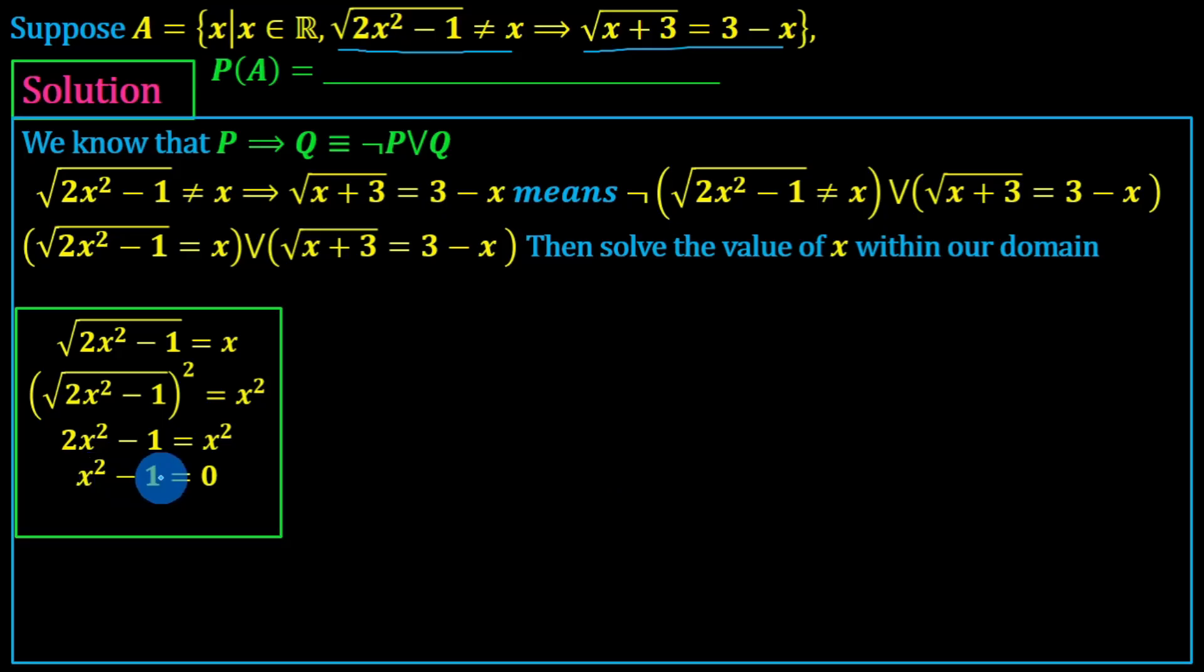x squared minus 1 equals x plus 1 times x minus 1. a squared minus b squared equals (a plus b)(a minus b). So x equals minus 1 or x equals 1.